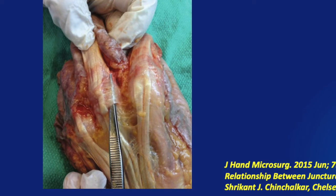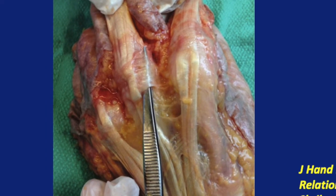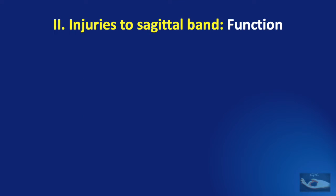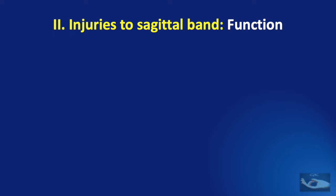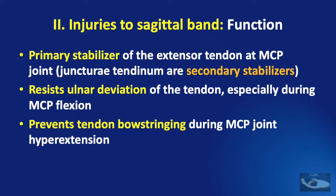The radial sagittal band is thick because forces tend to pull the extensor tendon towards the ulnar side; the radial sagittal band is thick and prevents this ulnar relocation of the extensor tendon while flexing the fingers. There are three important functions of the sagittal band: first, it is a primary stabilizer of the extensor tendon at the metacarpophalangeal joint — the juncturae tendinum are the secondary stabilizers. Second, the sagittal band resists ulnar deviation of the tendon especially during metacarpophalangeal joint flexion. Finally, the sagittal band prevents tendon bowstringing during metacarpophalangeal joint hyperextension.